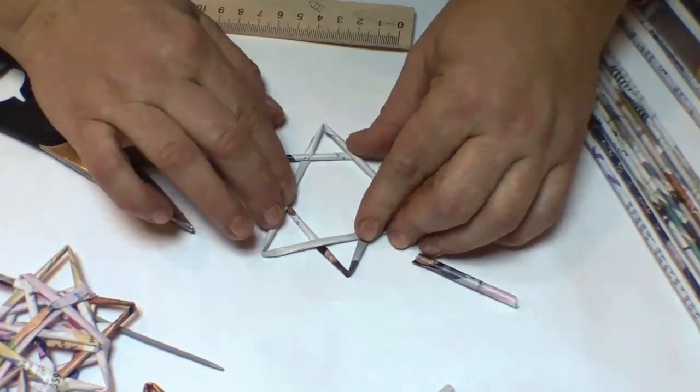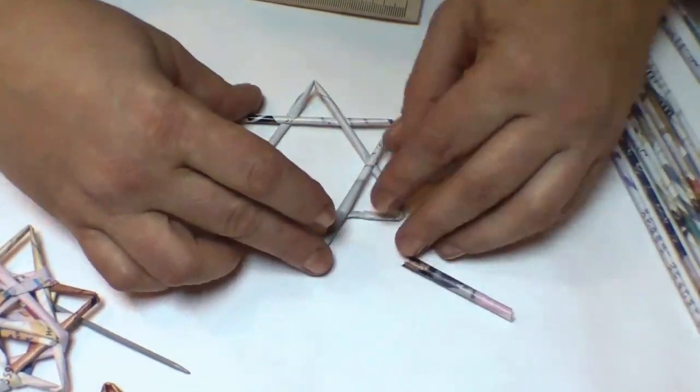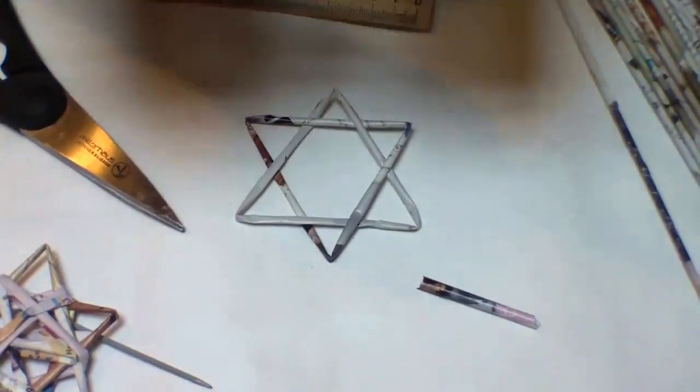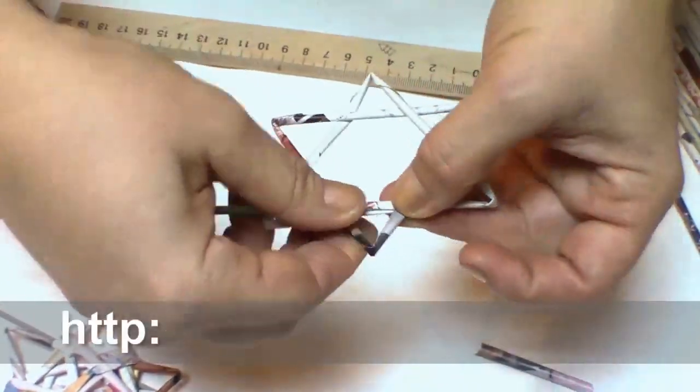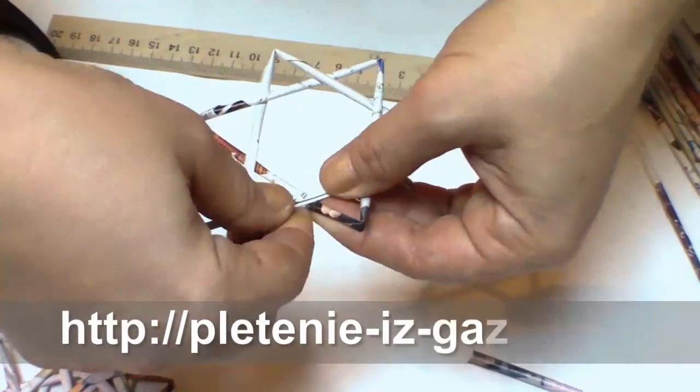So, we have made two triangles, crossed them with each other, smoothed. And further, we join a working tube and start wrapping.